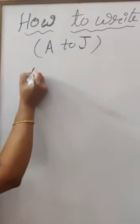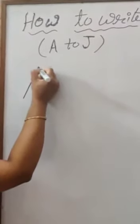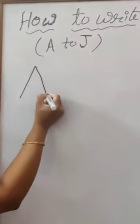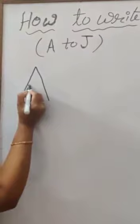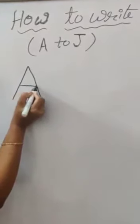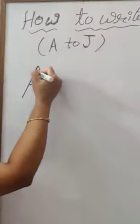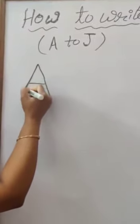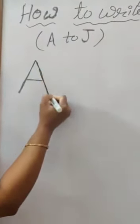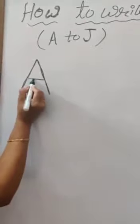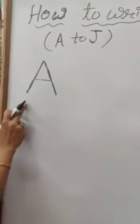A: one slanting line, one more slanting line, and one slipping line between both slanting lines — which makes A.